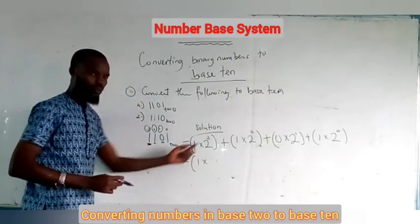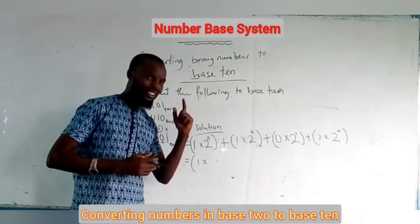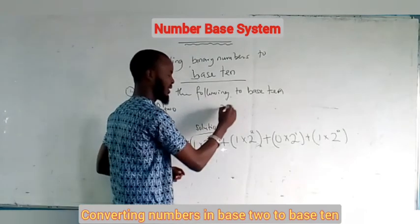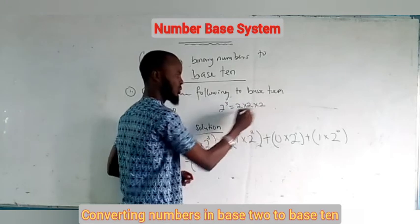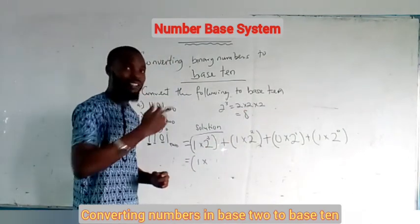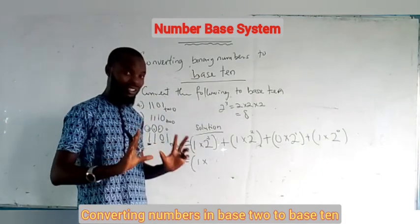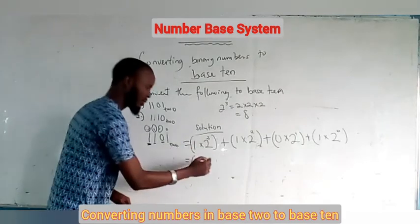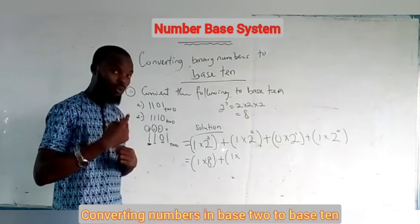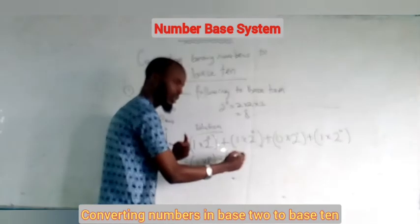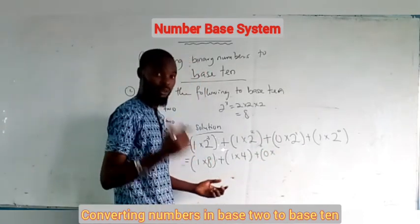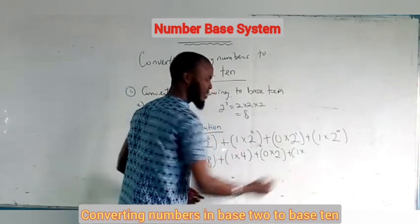We have 1 times 2 raised to power 3. Now, 2 raised to power 3 is 2 times 2 times 2, which equals 8 — not 6. You have to take note: power means multiplication, not addition. So 2 raised to power 3 gives 8. Plus 1 times 2 raised to power 2, which is 2 times 2, giving 4. Plus 0 times 2 raised to power 1. Plus 1 times 2 raised to power 0.